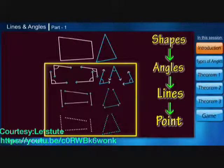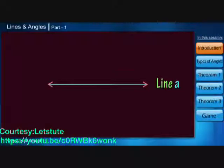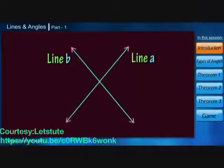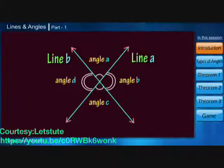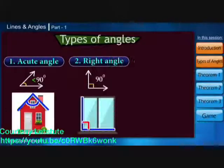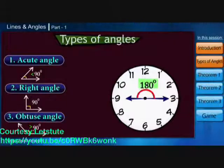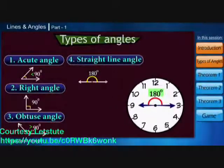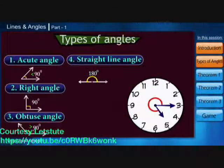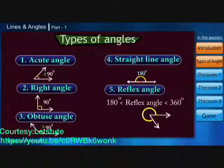We know what a line is, and when two such lines intersect each other, angles are formed. We have a few basic types of angles: acute angle, right angle, obtuse angle. Even a straight line forms an angle of 180 degrees. But have you ever wondered how to form an angle greater than 180 degrees and less than 360? These angles are called reflex angles.